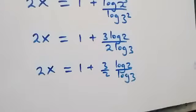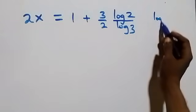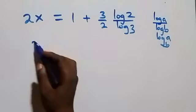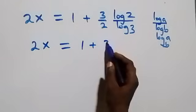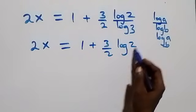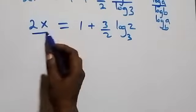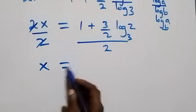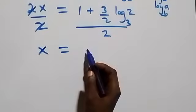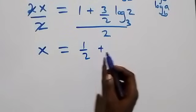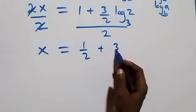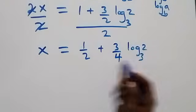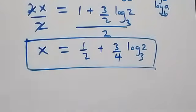Applying the change of base formula — log a over log b is the same as log a to base b — we have 2x equals 1 plus (3/2)·log₃2. We then divide both sides by 2, and so x equals 1/2 plus (3/4)·log₃2.